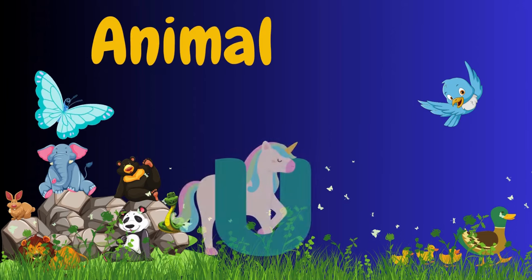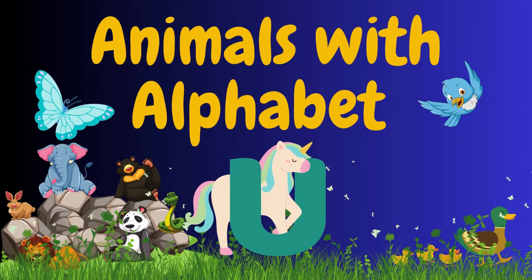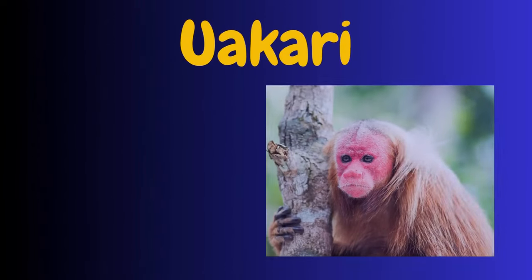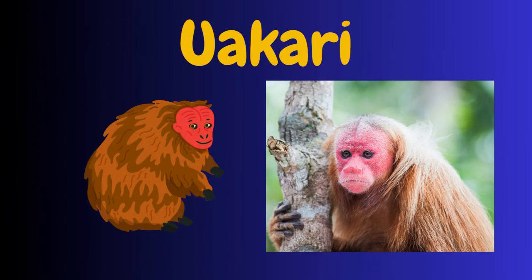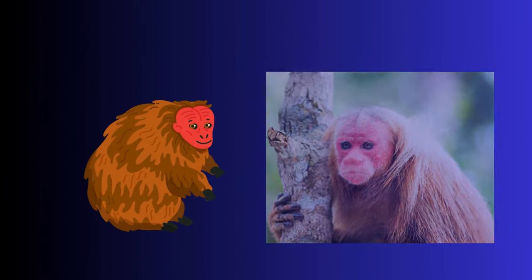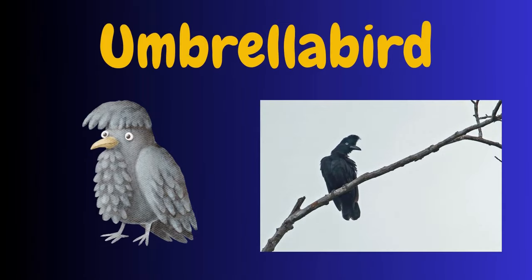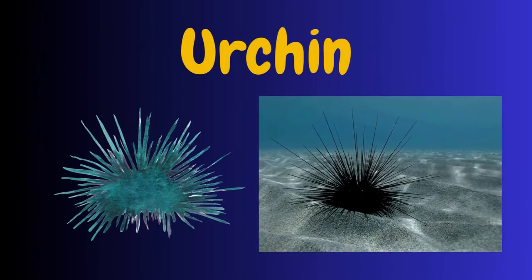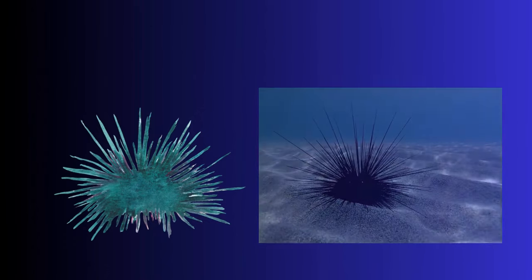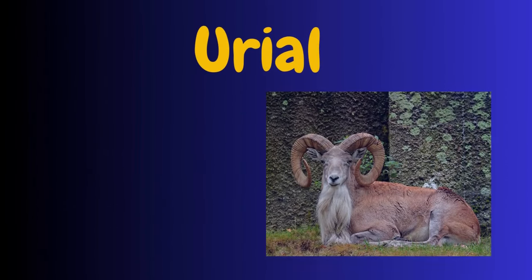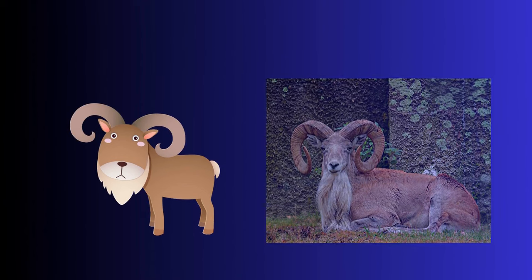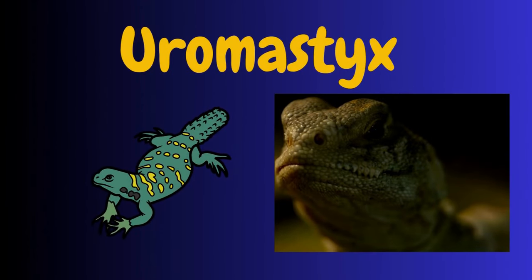Animals with Alphabet U. Uakari. Umbrella Bird. Urchin. Urial. Uromastyx.